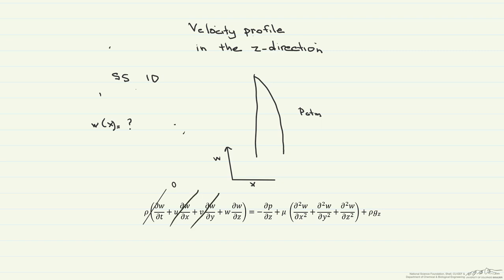We assume that the flow is fully developed, in other words, w is not a function of z, and that's going to be equal to zero. In addition, it's atmospheric pressure, which means that the pressure does not change with respect to z. It's going to be the same throughout, so that's zero.